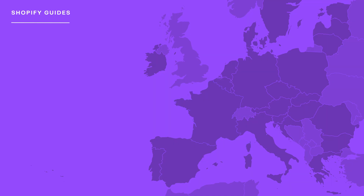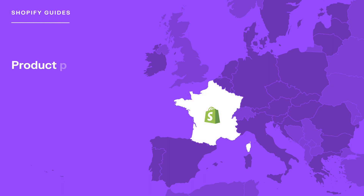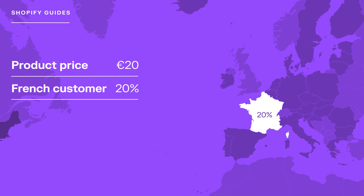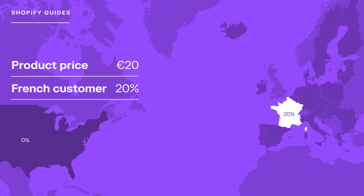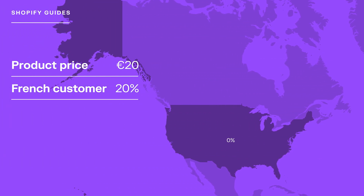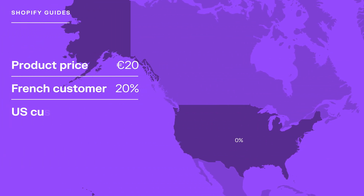Let's begin with an example of a Shopify store based in France that sells a product for 20 euros. As a French online store, we must charge a tax rate of 20% to customers in France. However, customers in the US are not subject to EU taxes and therefore the tax rate for them is 0%. With this example laid out, let's look at the three configurations, their differences, and how they impact the way tax is charged on your products.